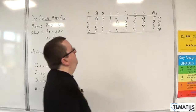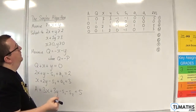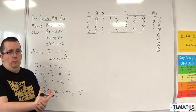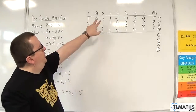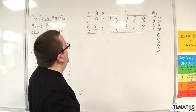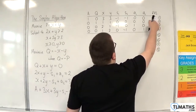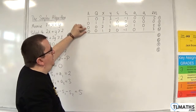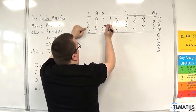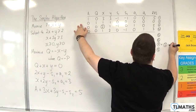Because we are minimising A, we look for the largest positive in the top row rather than the largest negative. We have two 3s, so it's a free choice — I'll use the x column as the pivot column. For the ratio test, ignore the top two rows and work with rows 3 and 4: 2 ÷ 2 = 1, and 3 ÷ 1 = 3. The smaller is 1, so row 3 is the pivot row. Row 7 = row 3 ÷ 2.